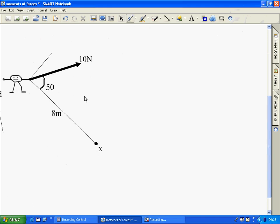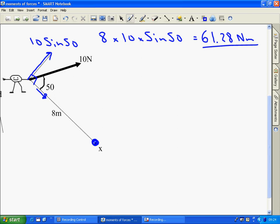I've said that the moment of force about a point is the perpendicular distance times that force. We can also rewrite that to say it's the distance times the perpendicular force. If we have this force componentized to be at 90 degrees to that distance, that's exactly the same thing. This component would be 10 sine 50. So our moment about point X is 8 times 10 sine 50, which gives us 61.28 newton metres.